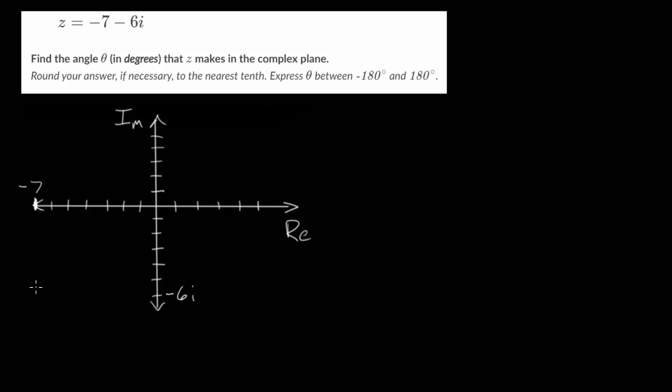We can plot this right about here. And let's draw a line between this point and the origin. Or essentially, we're drawing the vector to this complex number.